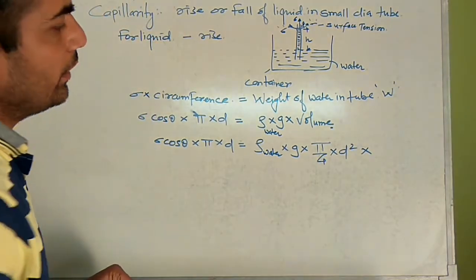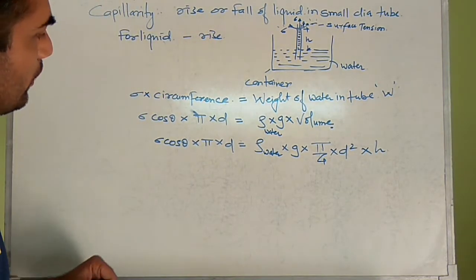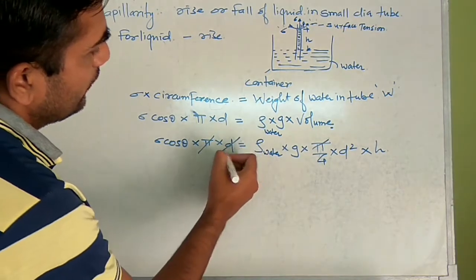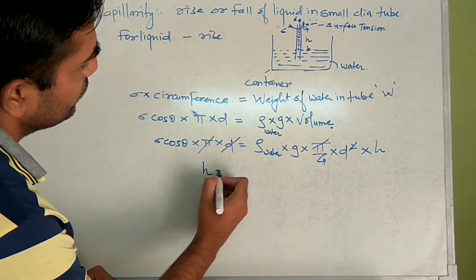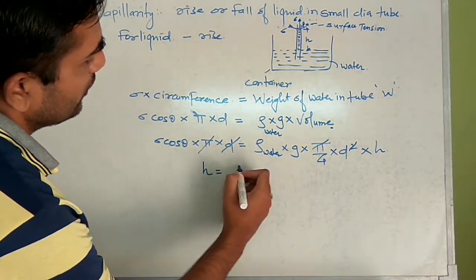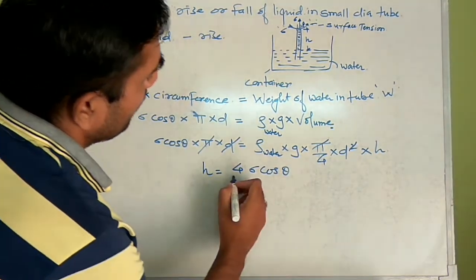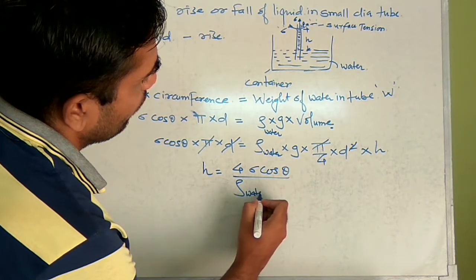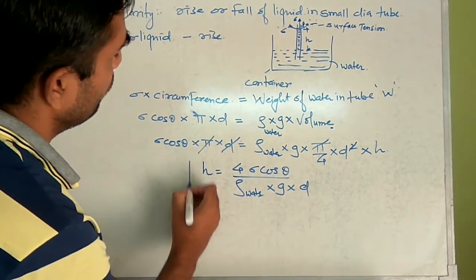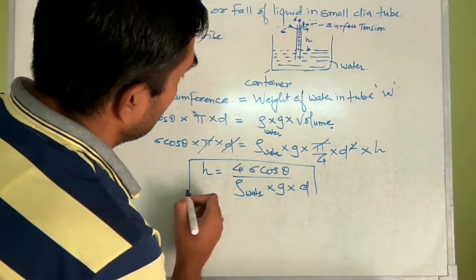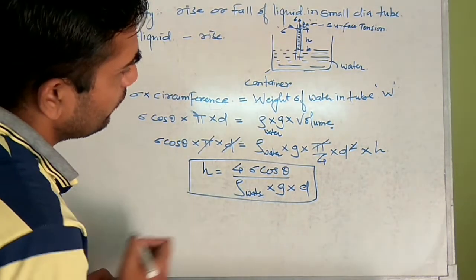Now pi gets cancelled and d gets cancelled and d square simplifies, so we arrive at the formula: H equals 4 sigma cos theta divided by rho times g times d. So H equals 4 sigma cos theta divided by rho g d.